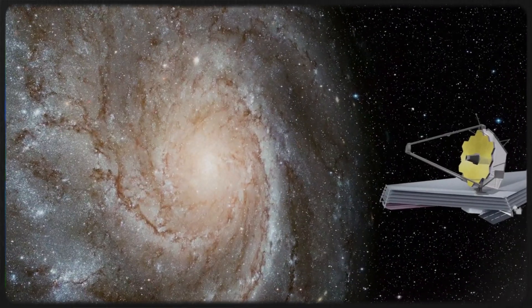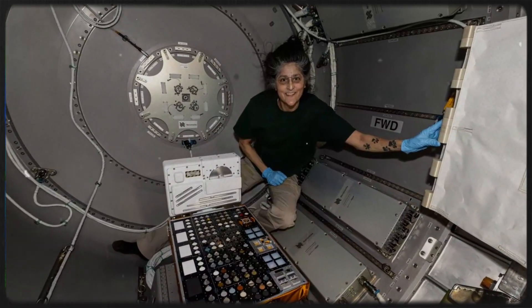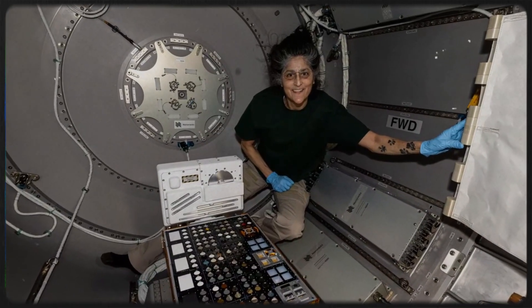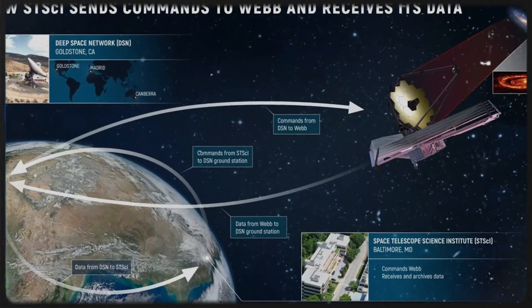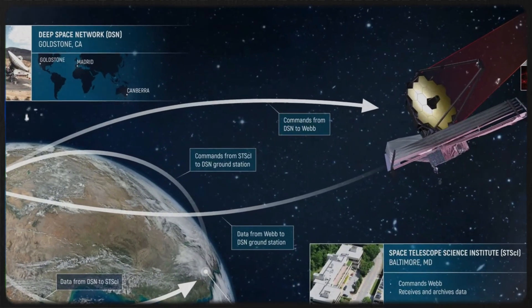When scientists plugged these numbers into the complex equations that balance mass, momentum, and the inevitable outgassing of volatile ices, there was no escape. The mass of 3i/Atlas had to be tremendous.